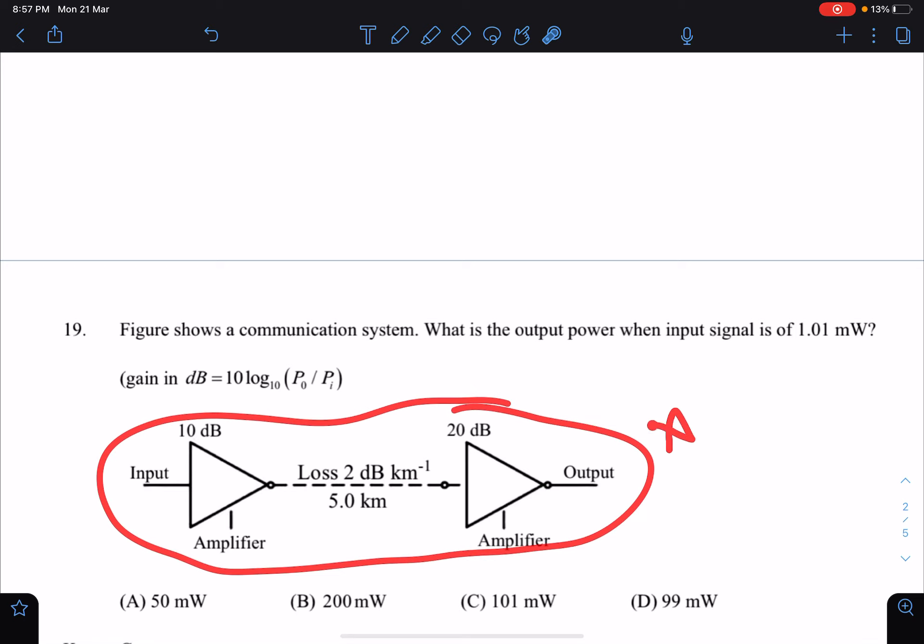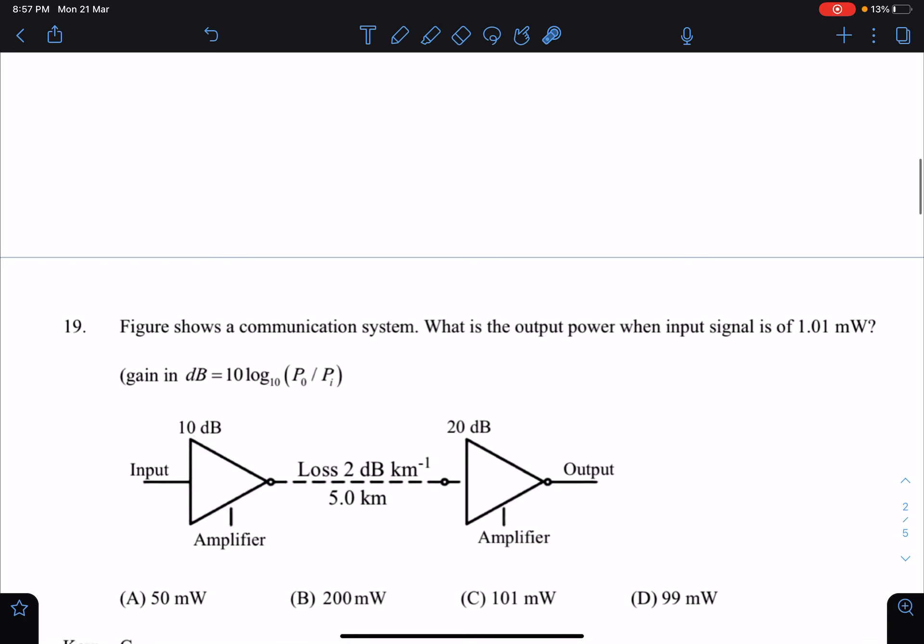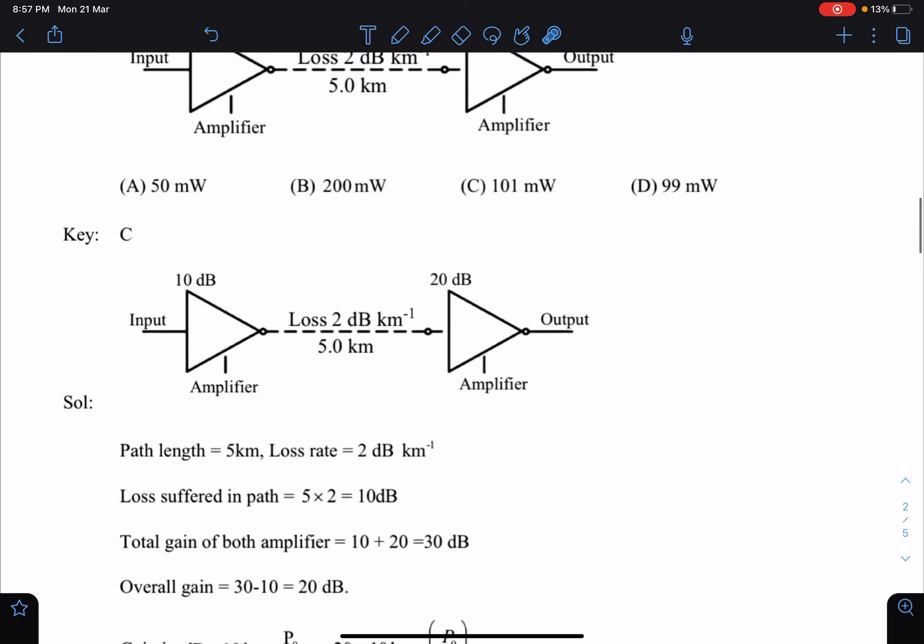Let's solve this question. The path length is 5 km, loss rate is 2 dB per km, so loss is 10 decibels. The gain from both amplifiers - first is 10 decibels and another is 20 decibels - so total gain is 30 dB.